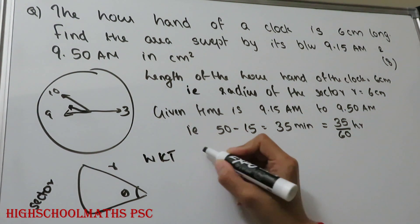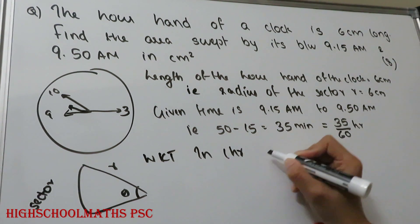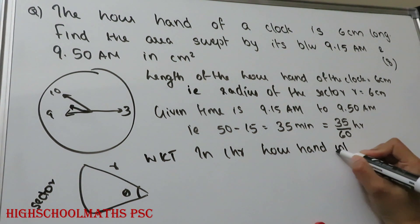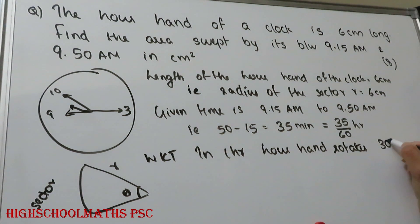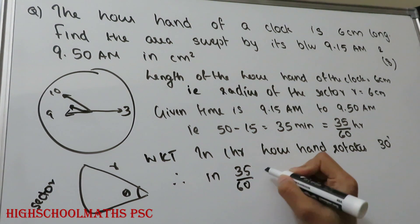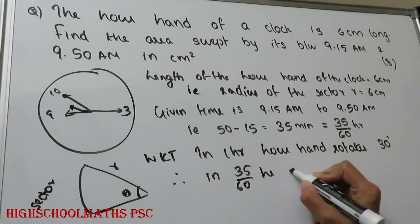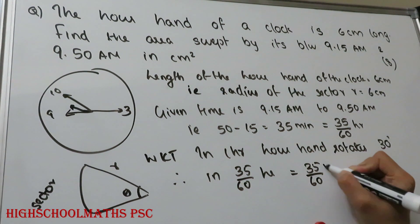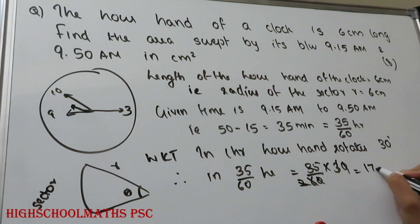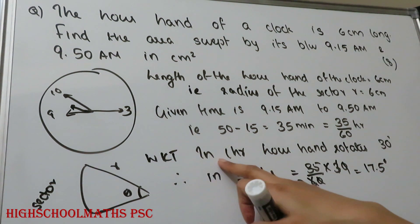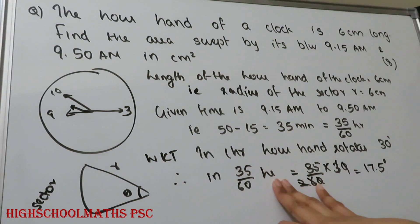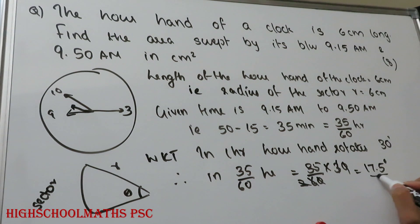We know that in 1 hour, the hour hand rotates 30 degrees. Therefore, in 35/60 hours, the hour hand rotates 35/60 × 30 degrees. Simplifying, that equals 17.5 degrees. Therefore, the central angle of the sector, θ, is equal to 17.5 degrees.